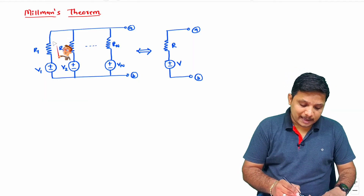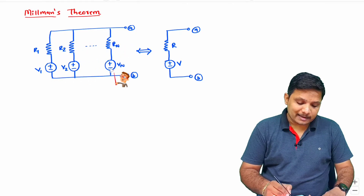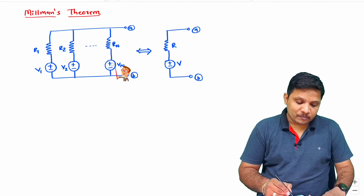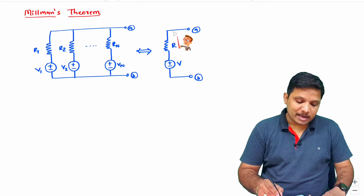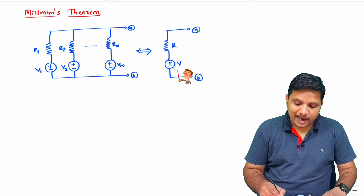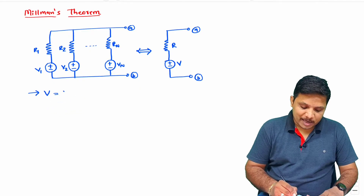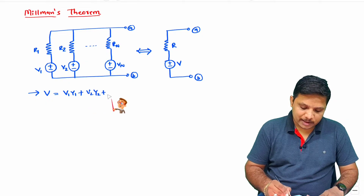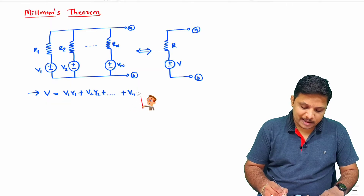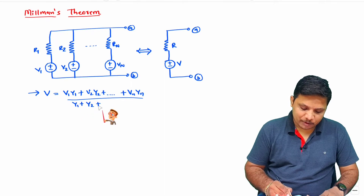If you have a circuit in which a resistor in series with a voltage source is connected in parallel combination, then the equivalent network of this will be a resistance in series with a voltage. The value of that equivalent voltage source will be V1·Y1 plus V2·Y2 plus up to Vn·Yn, divided by Y1 plus Y2 plus up to Yn.